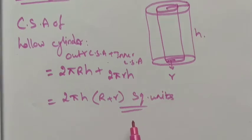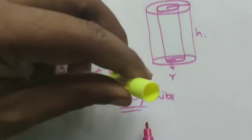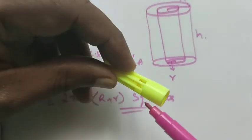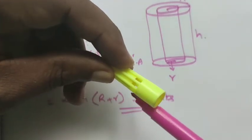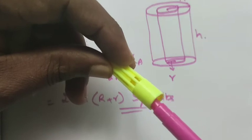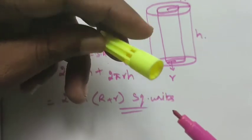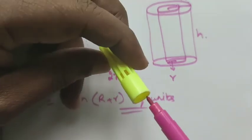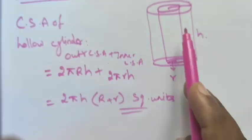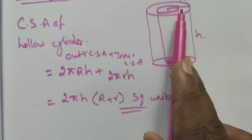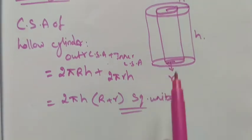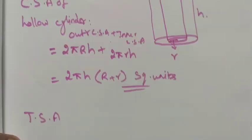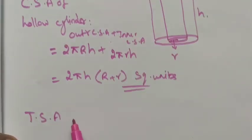This is the formula for the curved surface area of the hollow cylinder. In hollow, we have the outer curved and inner curved portions — two portions. So you must add the two portions with radius capital R and small r. Next we see the total surface area (TSA) of the hollow cylinder.